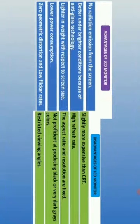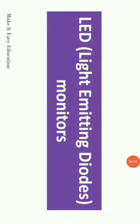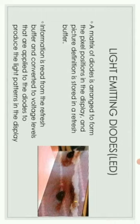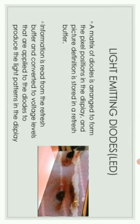Those are the advantages of LCD monitors. Now, LED — Light Emitting Diodes monitors. LED monitors are the latest monitors on the market. In LED displays, diodes are used at each pixel position. All the diodes are used, and the voltage level applied to each diode controls the display. The matrix of diodes is arranged to form the pixel positions in the display. The picture definition is stored in the refresh buffer. Information is read from the refresh buffer and converted to voltage levels that are applied to the diodes to produce the light pattern in the display. All the pixels in the display are in the position of the diodes, and the pixel definition is stored.